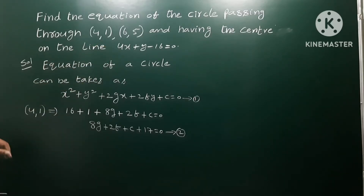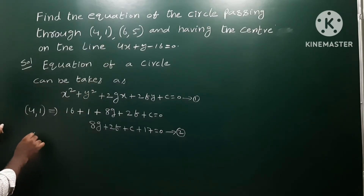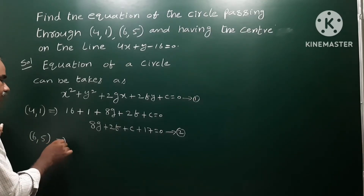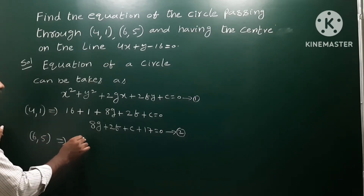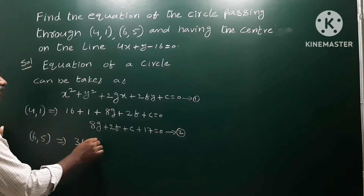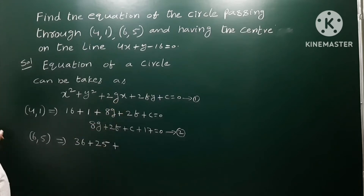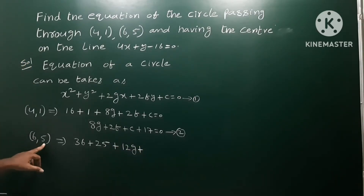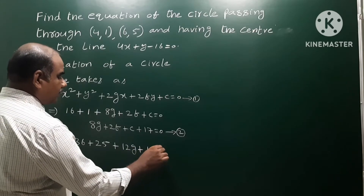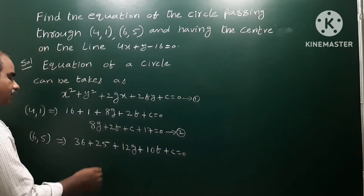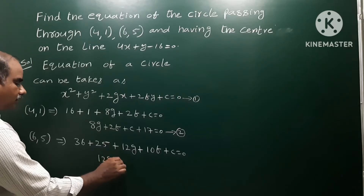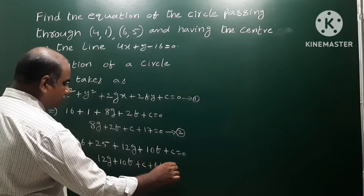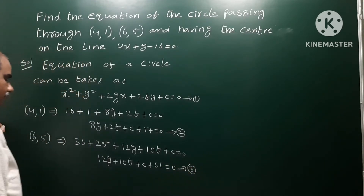Next, take the second point. Our circle is passing through the point (6,5). That implies x=6, y=5. So x squared gives 36, y squared gives 25. Plus 2g into 6 gives 12g, plus 2f into 5 gives 10f, plus c equals 0. This can be represented as 12g plus 10f plus c plus 61 is equal to 0. Let us say this is equation number 3.